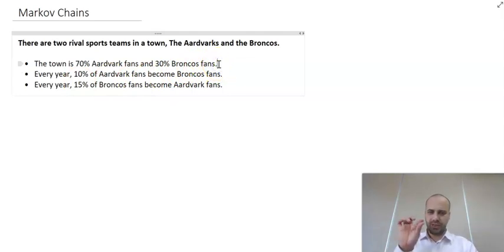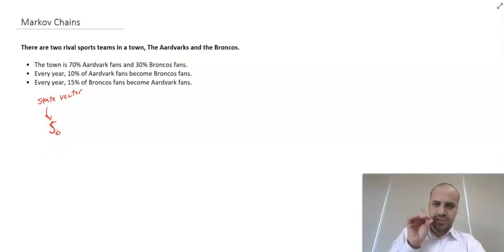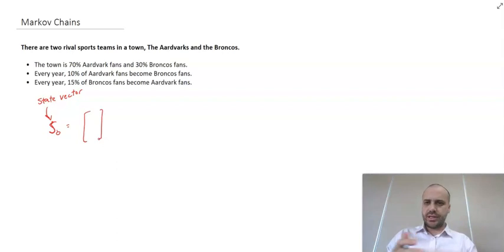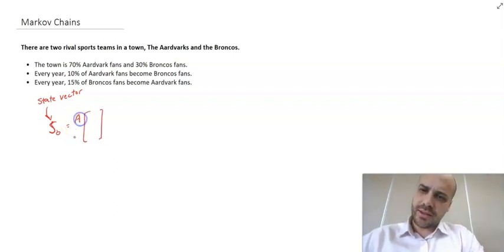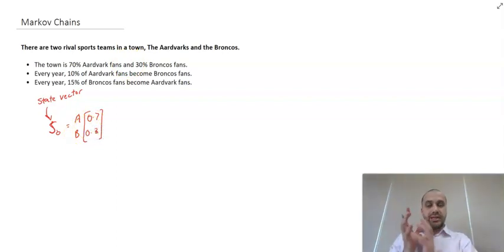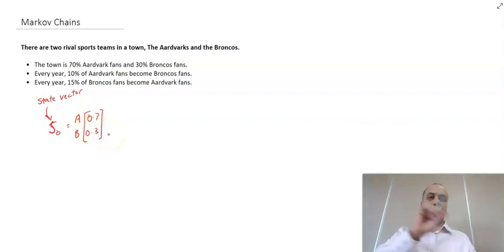Let's focus on that first dot point because that's where we're going to get what's called our state vector from. We use the letter S to represent the state vector, and this is the initial state, so state vector zero. That's going to be a column matrix — which we can call a vector — with A and B. It says 70% are Aardvark fans, so that's 0.7, and 30% are Bronco fans, so 0.3. This is our initial state: 0.7 and 0.3.